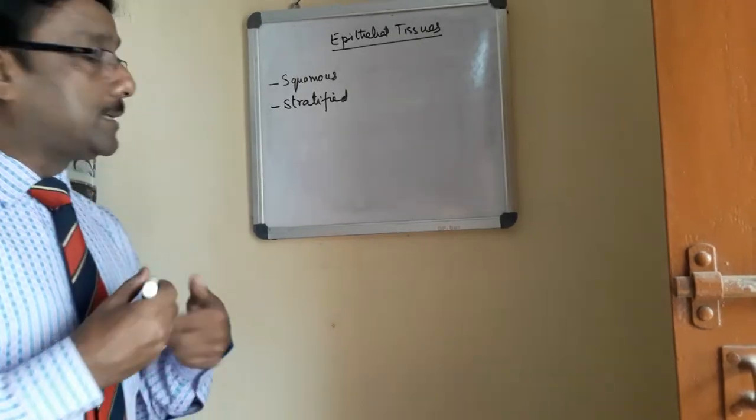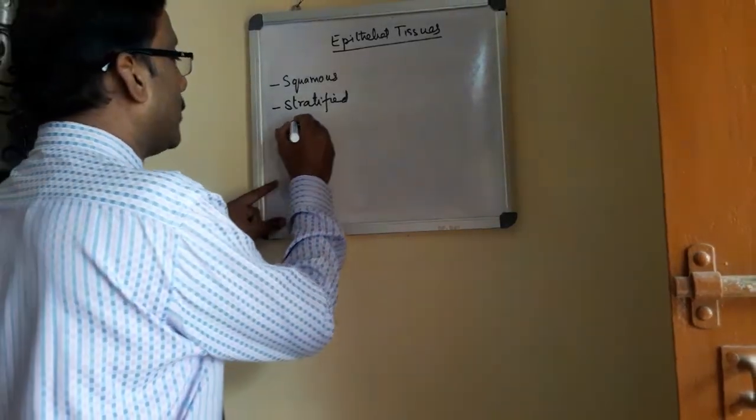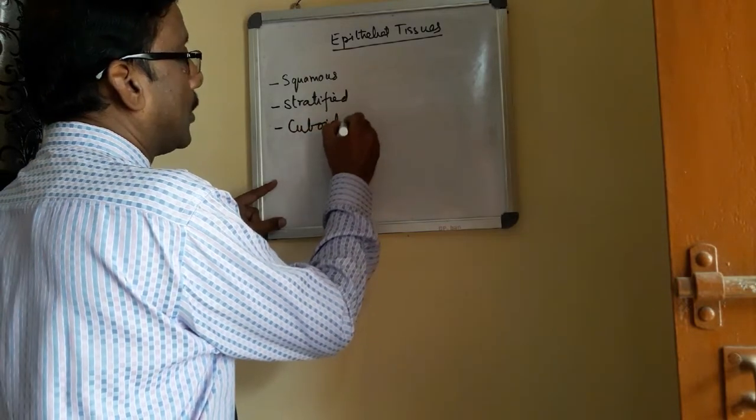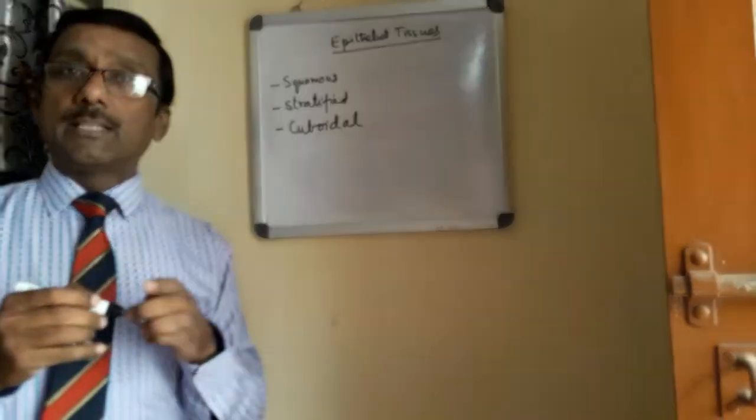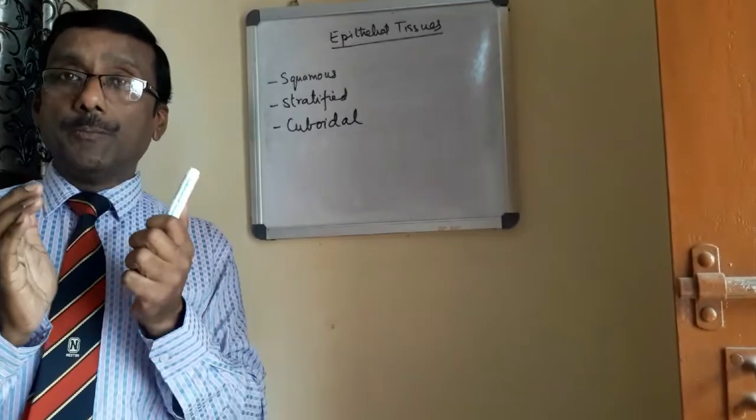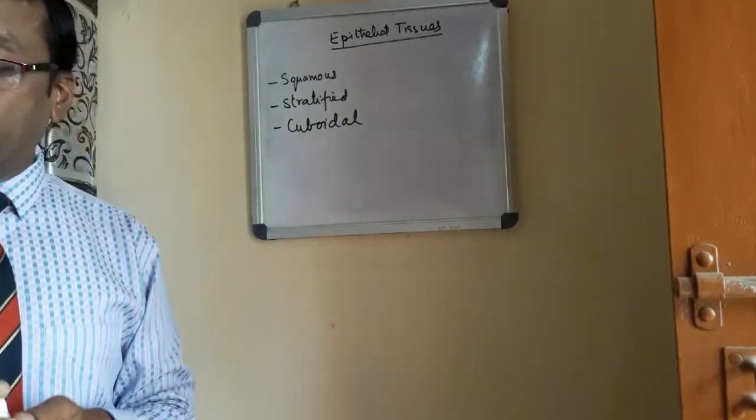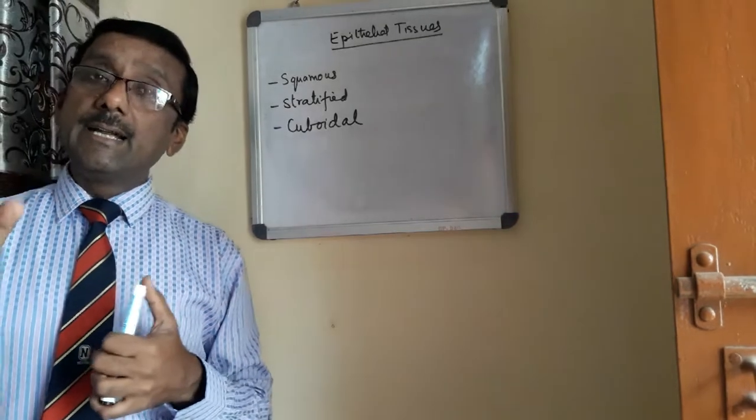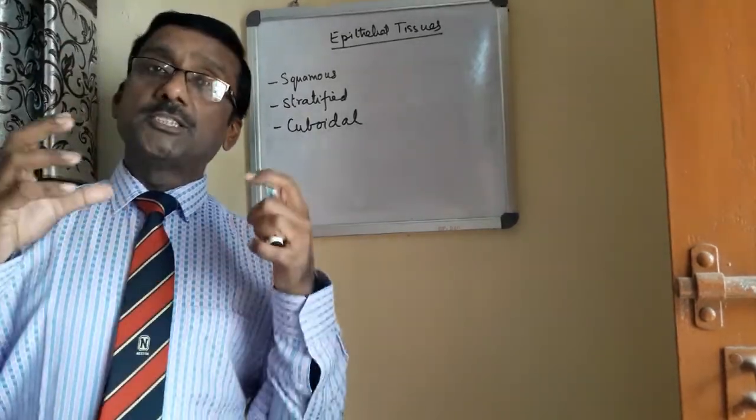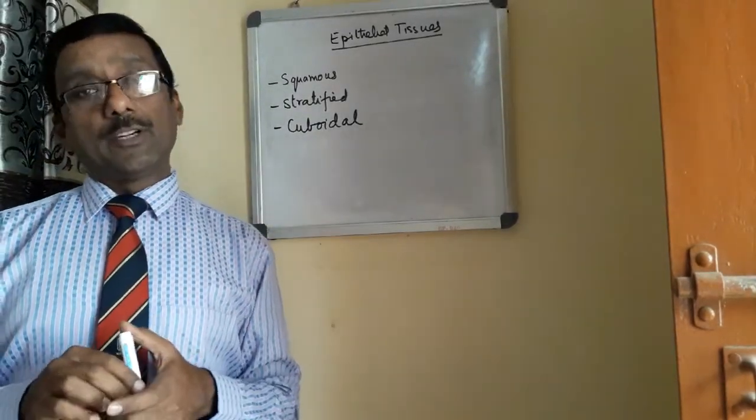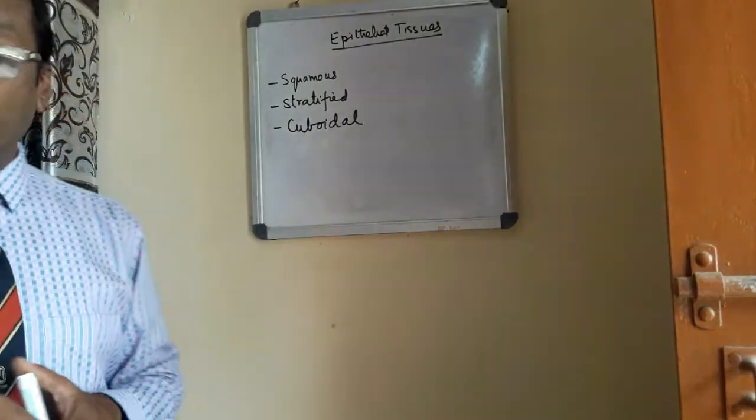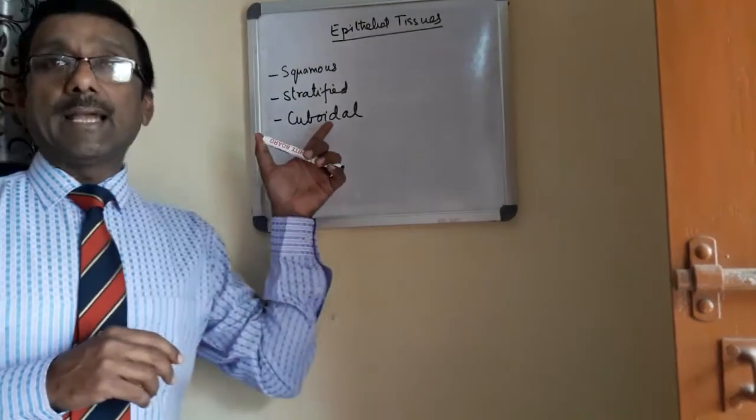Cuboidal, as the name suggests, the structure is like a cube. It is present in kidney and in sweat glands. The function is absorption and secretion.